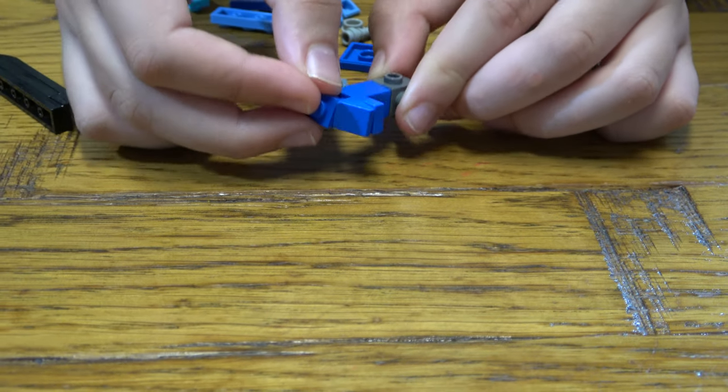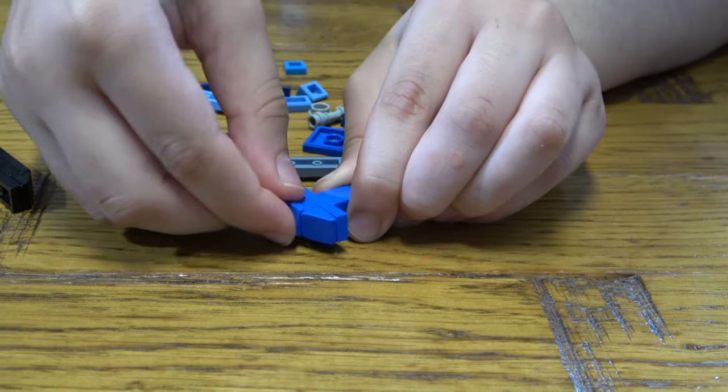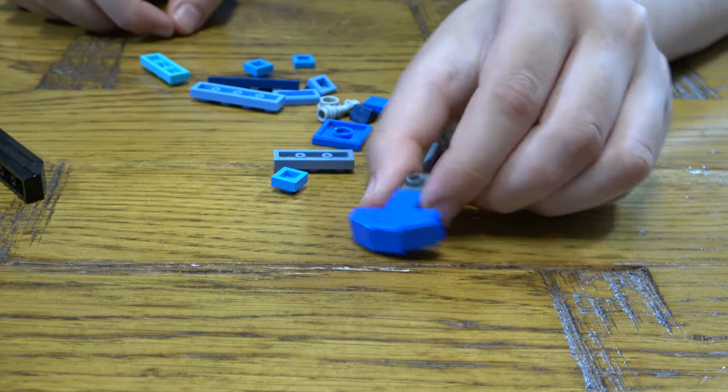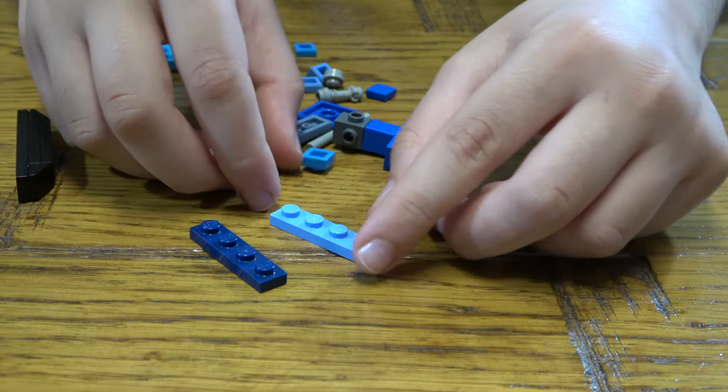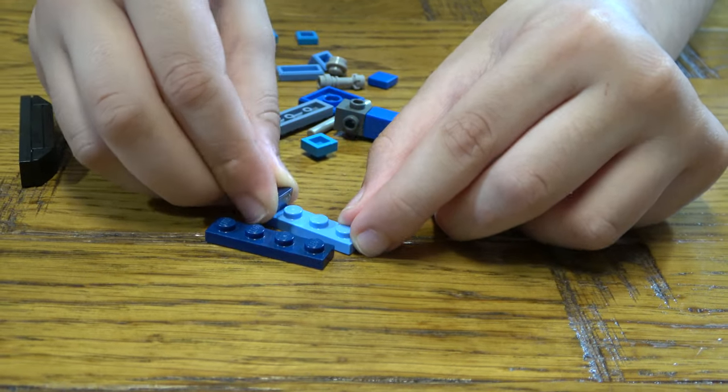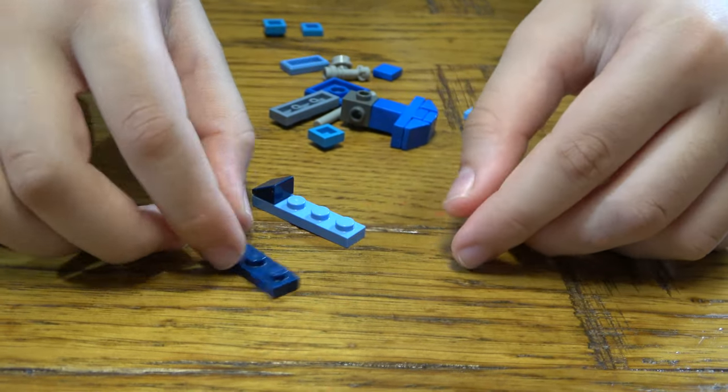Then place this here, and a flat one there, like so. Then get this, this, this here, this here.